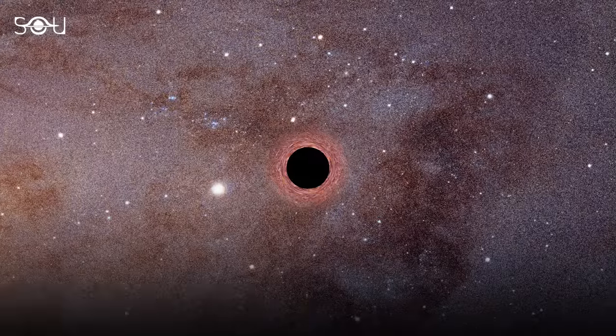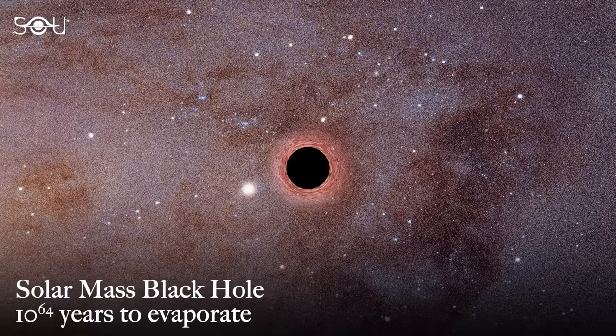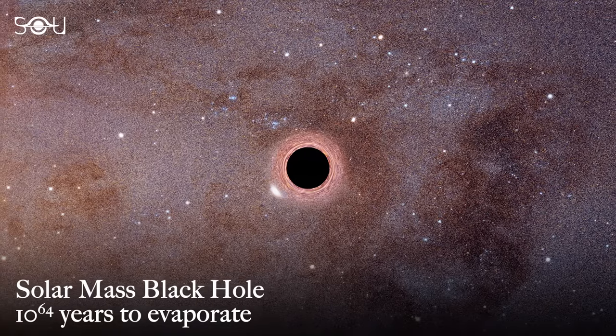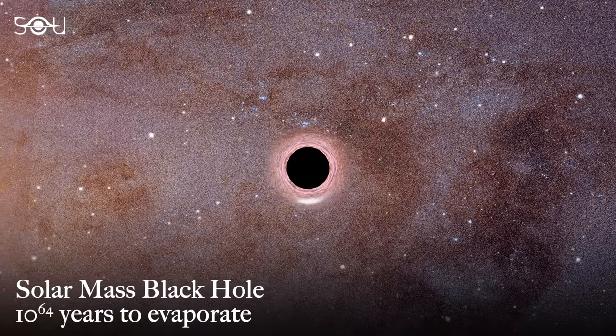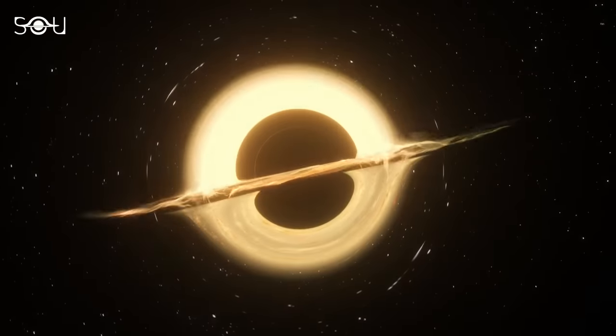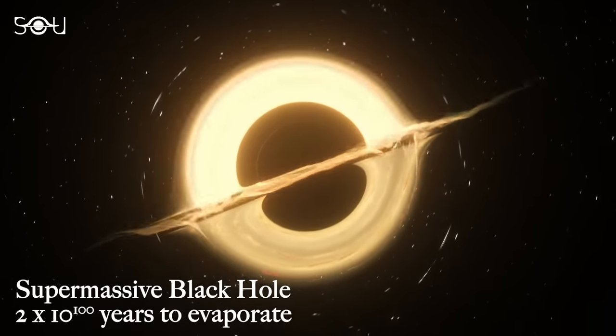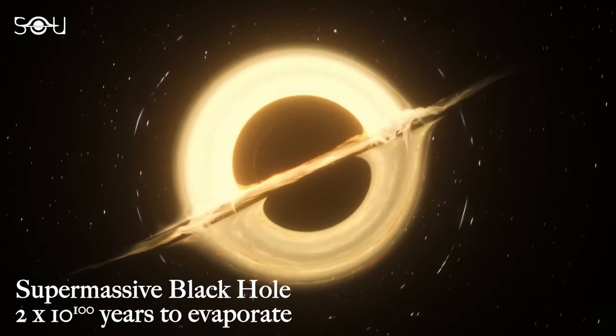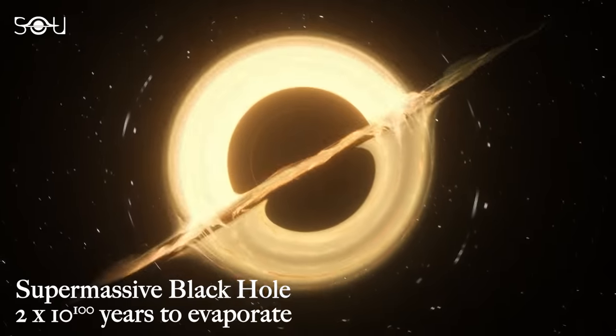For reference, a solar mass black hole would take 10 to the power of 64 years to evaporate. On the other hand, a supermassive black hole with a mass of 100 billion solar masses would evaporate in 2 times 10 to the power of 100 years.